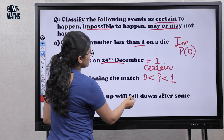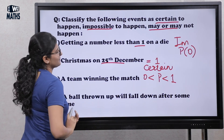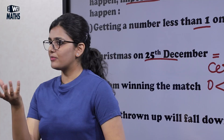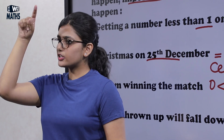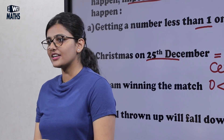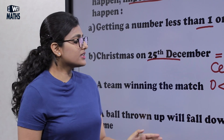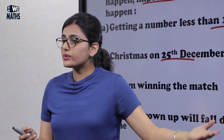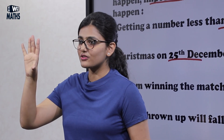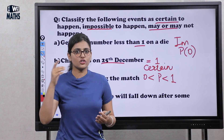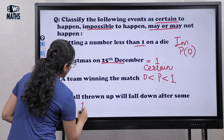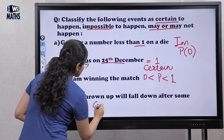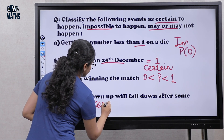The next is: a ball thrown up will fall down after some time. If you toss a ball in the air, it will come down because of gravity. So this will always happen — it is not possible that it will stay up in the air. So the probability will be 1. It is a certain event.